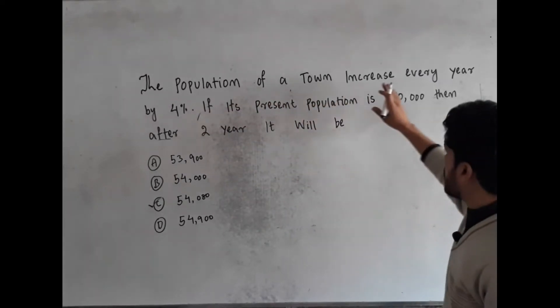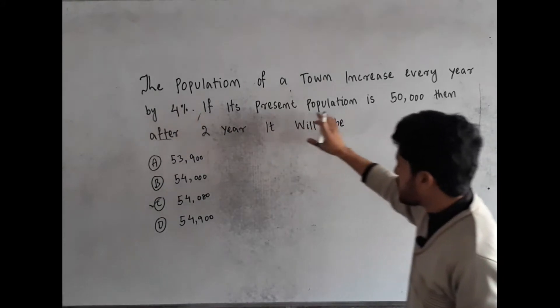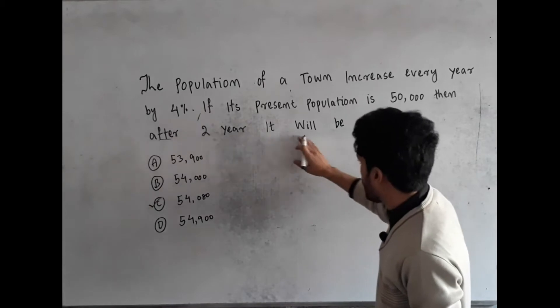The population of a town increase every year by 4%. If its present population is 50,000, then after 2 years it will be.